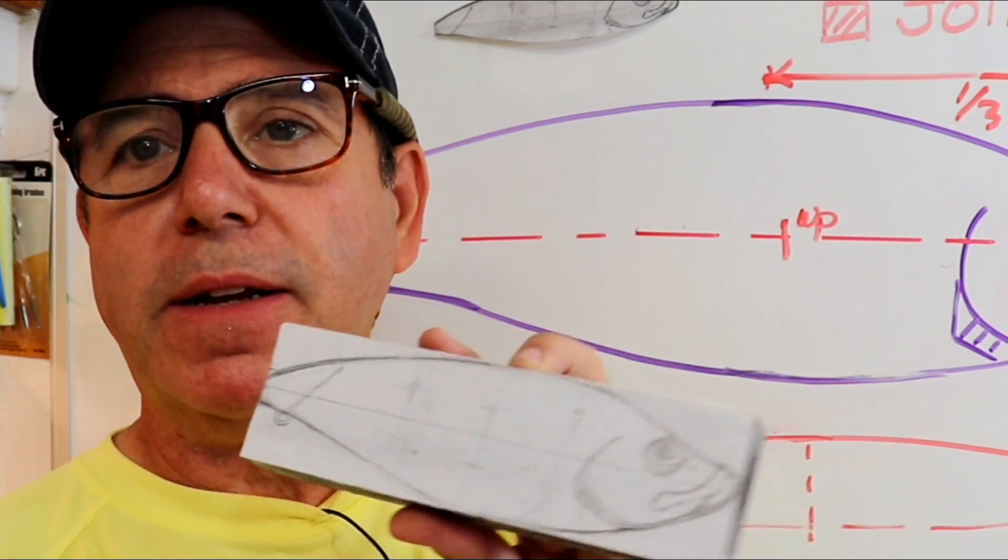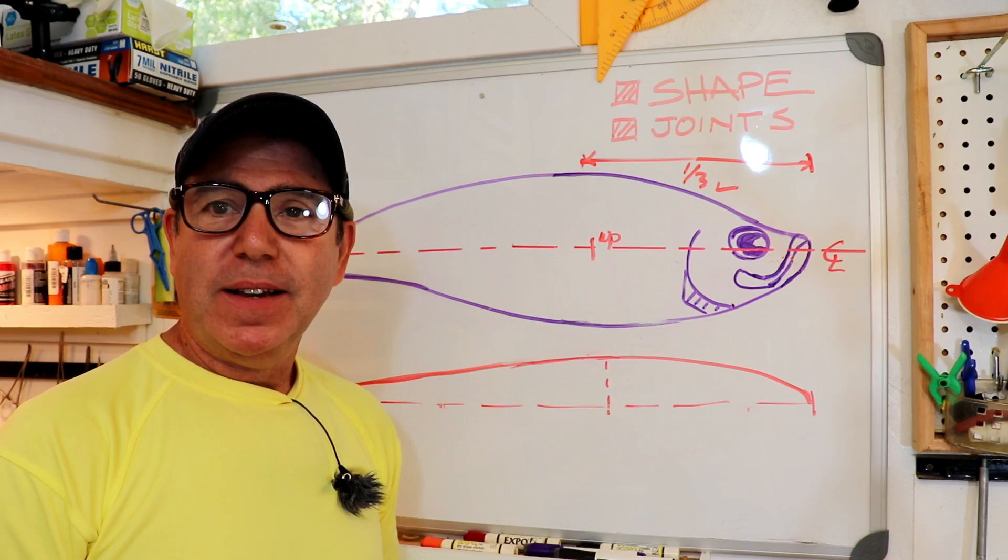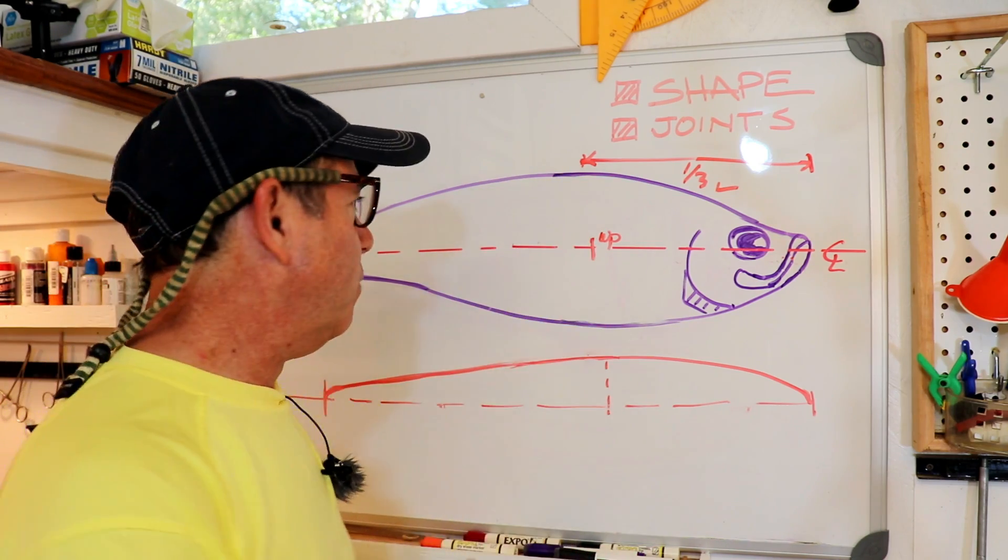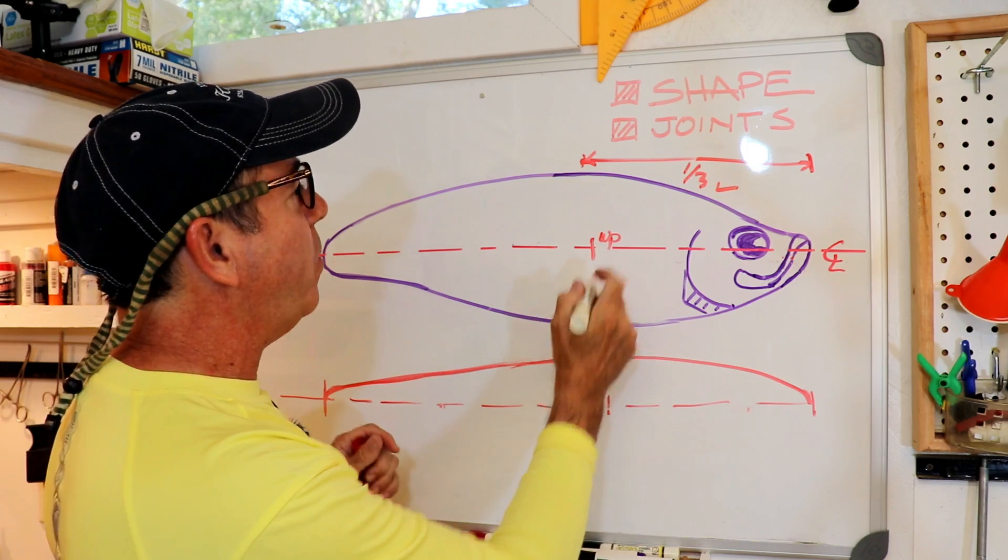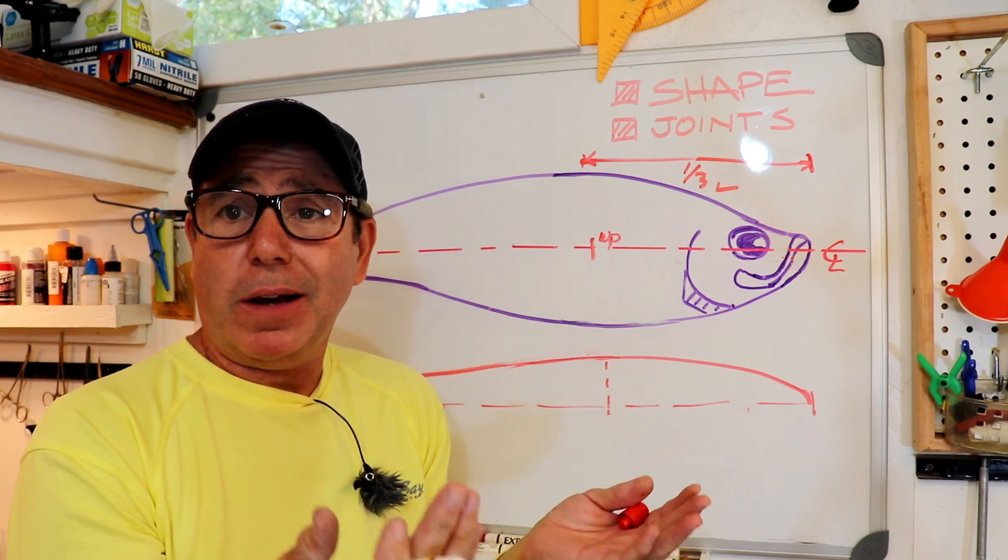So I've already taken the block we're going to use to make this lure and I glued a piece of paper on it and then I sketched out that same fish back there.